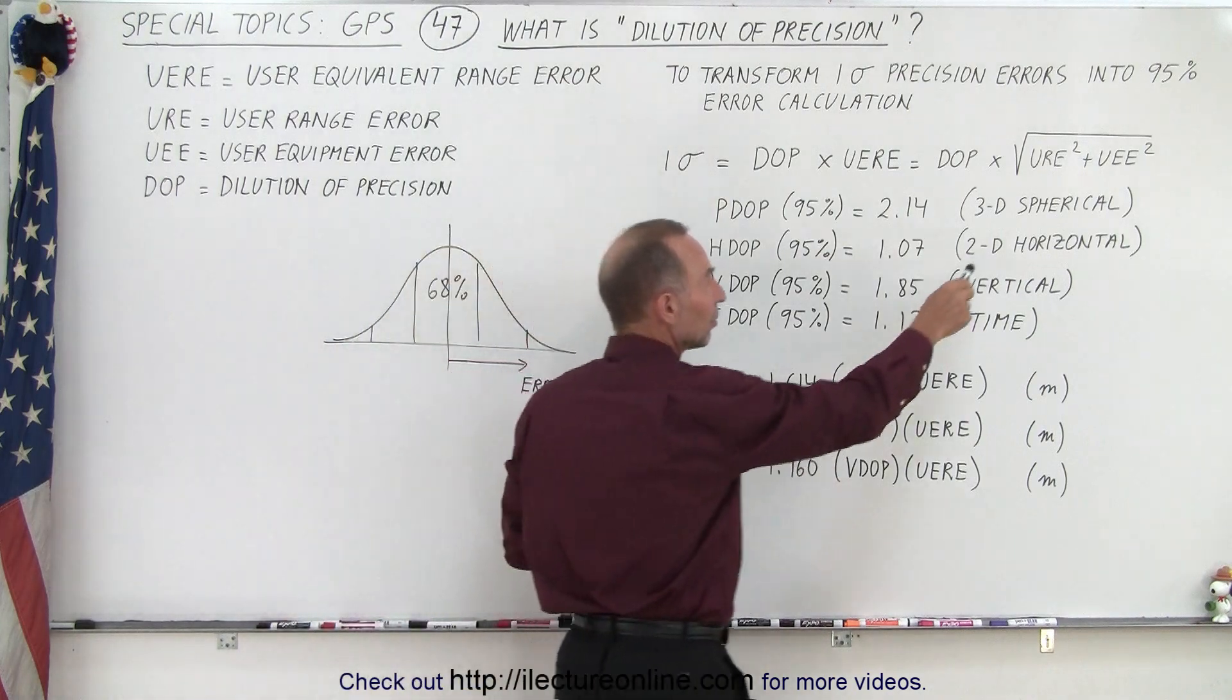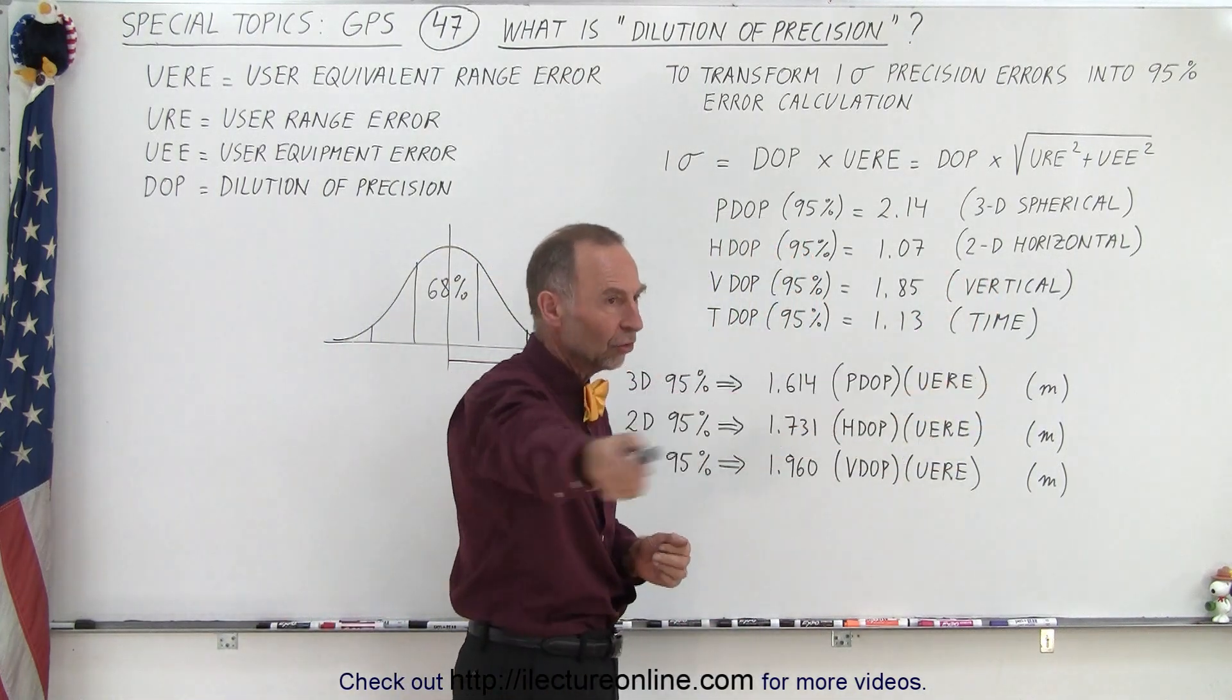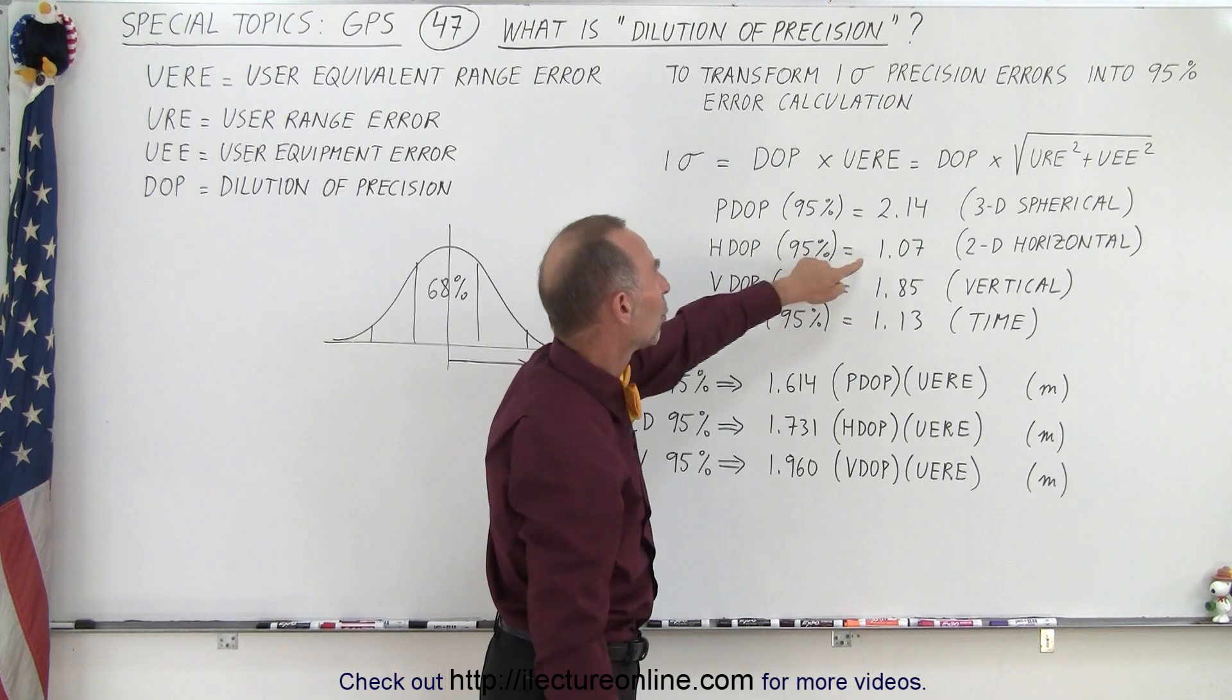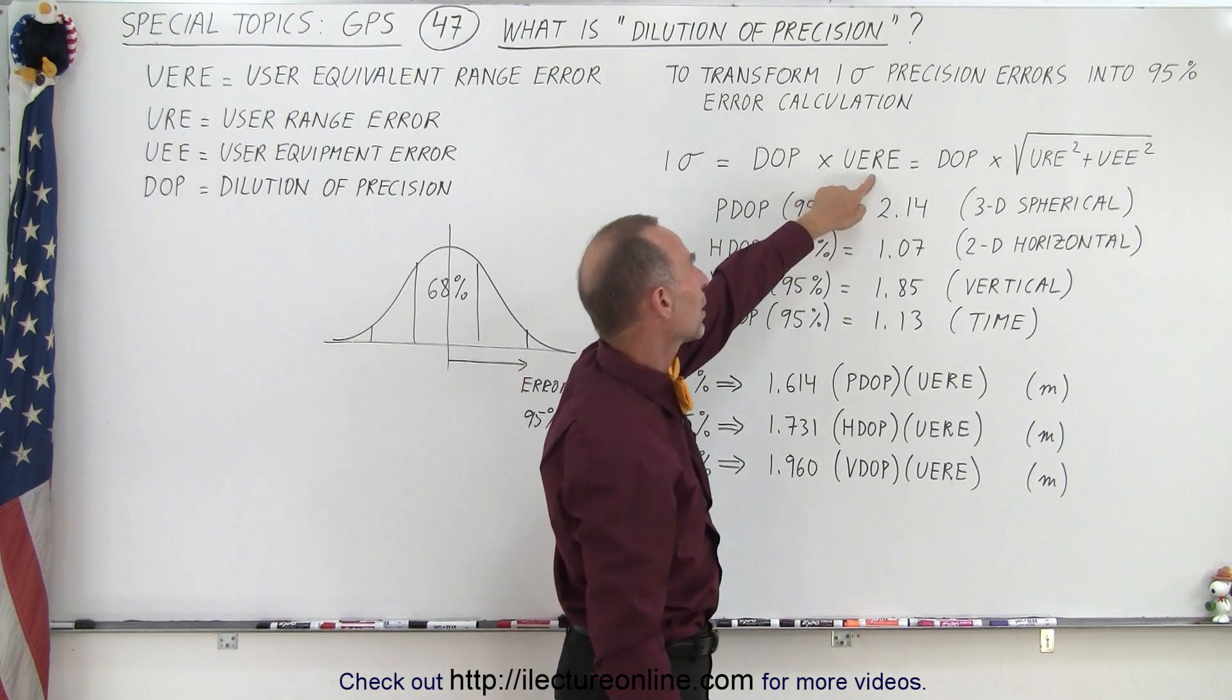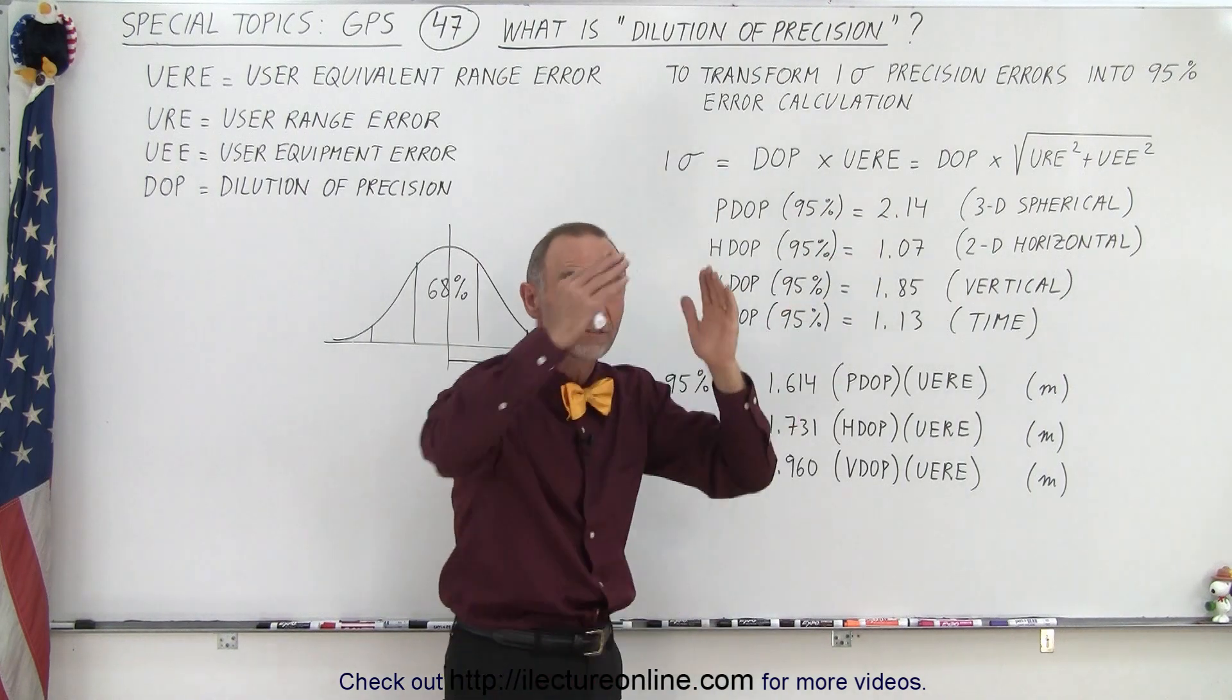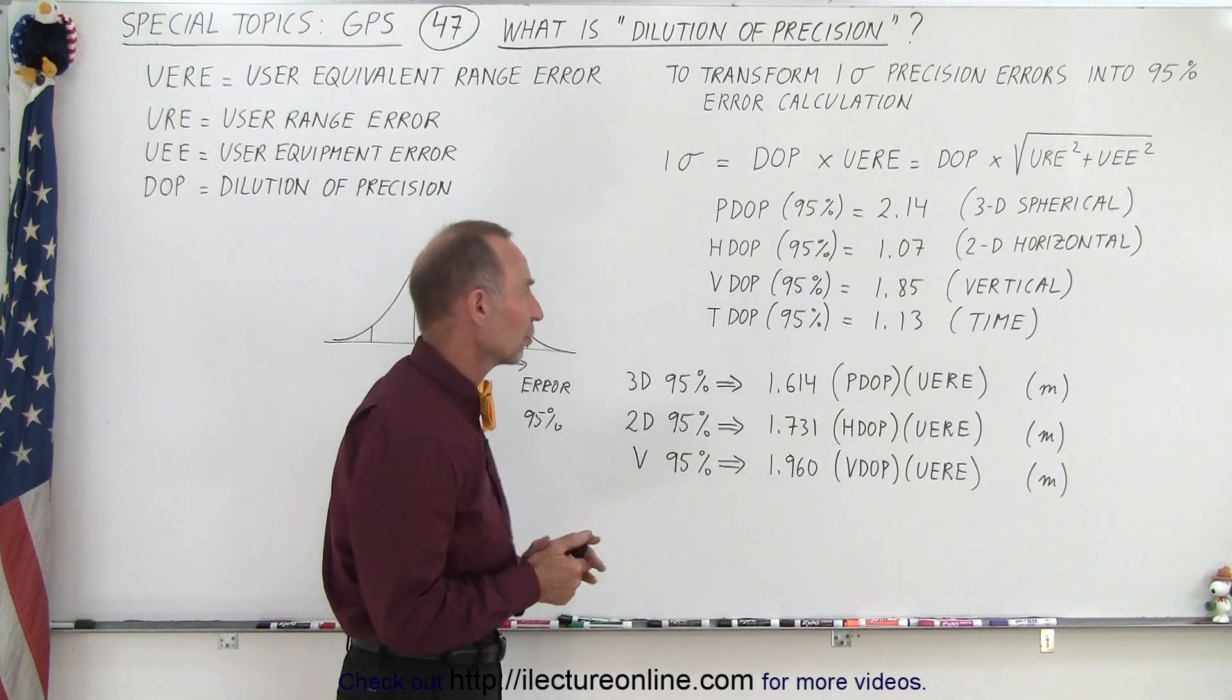If we work with the horizontal value only, in two dimensions, then our HDOP, H for horizontal, is equal to 1.07, so we take our UERE, multiply it by 1.07, to get the one sigma value of the variation in the range measurements.